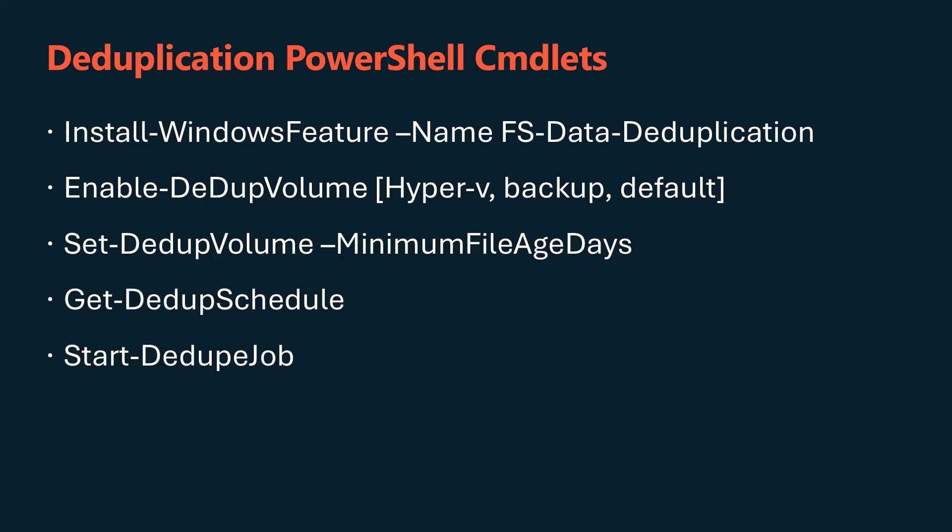Most of the time you will pick Default. To configure the settings of a volume to be deduplicated, use the Set-DedupVolume cmdlet. You can use this command to set the minimum age of files to be deduplicated — the default is three days. If you set it to zero days, any file on the volume can be deduplicated the next time a deduplication job runs. You can force an out-of-band deduplication job using the Start-DedupJob cmdlet.